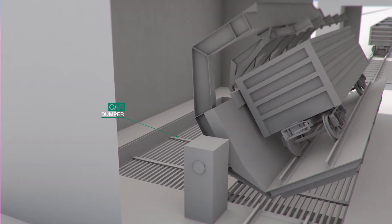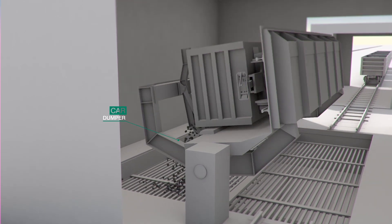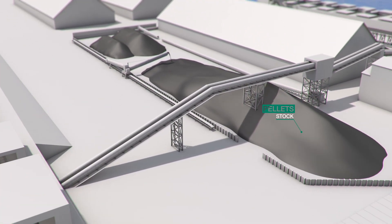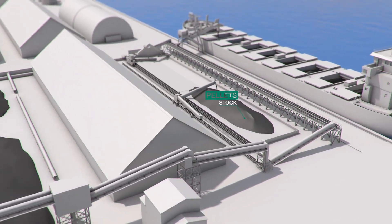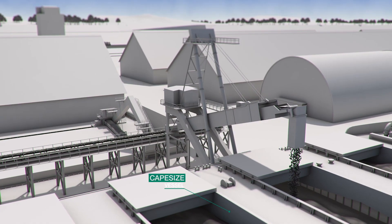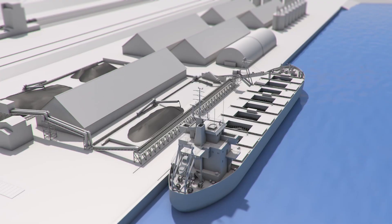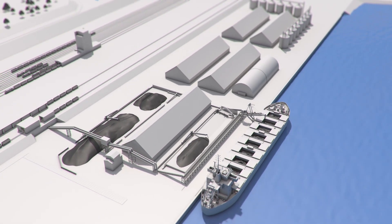At the port, the pellets are discharged through the railcar tip and transported along a conveyor to the stockyards. Product is loaded onto ocean-going vessels for delivery to customers around the world.